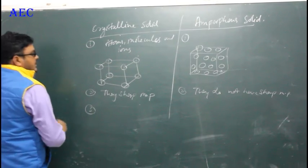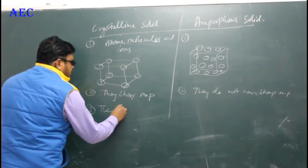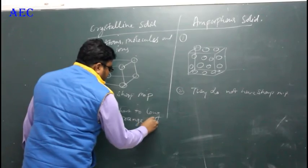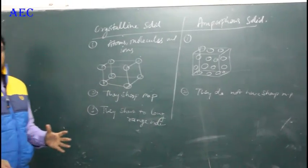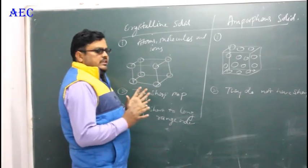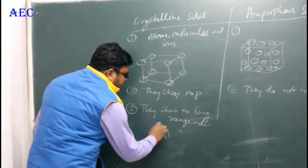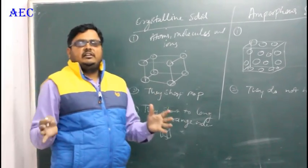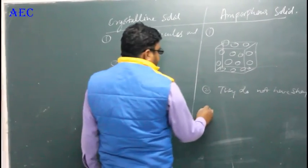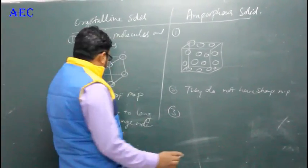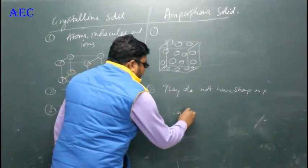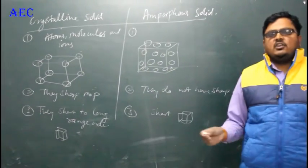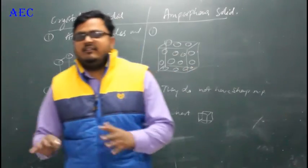Third point of difference: crystalline solids have short to long range order, meaning they exhibit crystalline arrangement whether in small or large form — particles appear in a regular arrangement throughout. Amorphous solids have short range order only; in the long range, they lose their ordered arrangement.